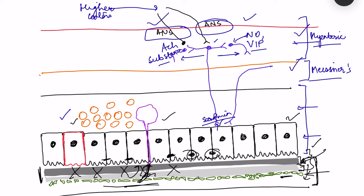In summary, the gut-brain axis involves three types of signaling: neuronal signaling, where higher centers affect the autonomic nervous system which modulates the enteric nervous system; neuropeptide/enteroendocrine signaling, where gut microbiome metabolic products affect neuropeptide secretion by enteroendocrine cells influencing body functions including food intake; and immune signaling, where changes in the gut barrier lead to low-grade pro-inflammatory conditions affecting brain function.